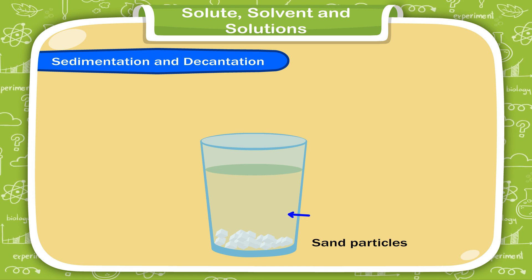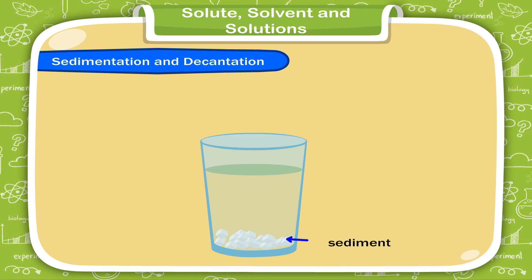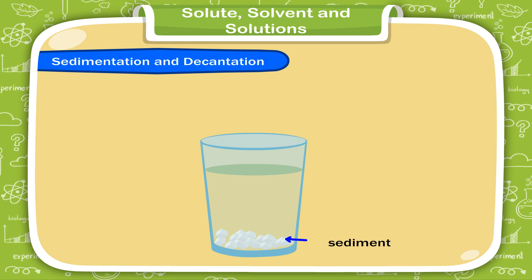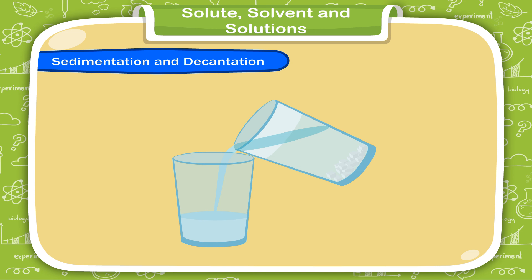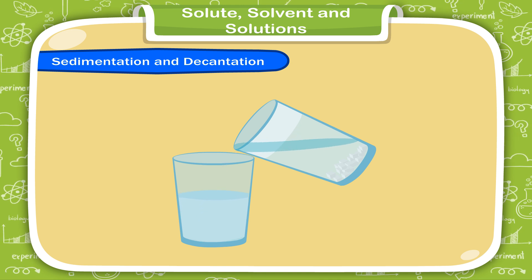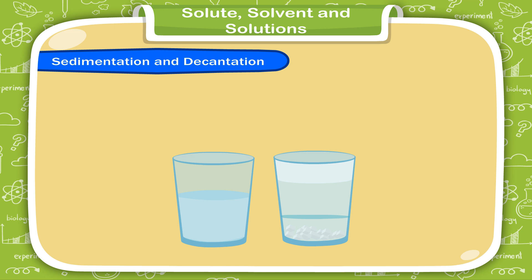The sand that settles down is called sediment, and the process is known as sedimentation. Now, pour the clean water into another glass slowly, as shown in the figure.